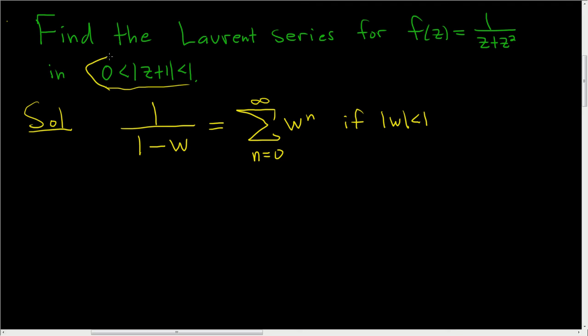So in this problem, we have this region here, and we basically have to rewrite our function so that w is equal to z plus 1. So there's a couple ways to go about this.